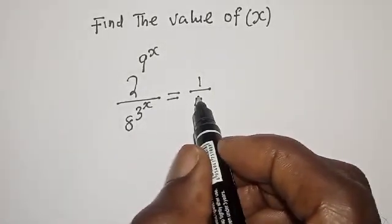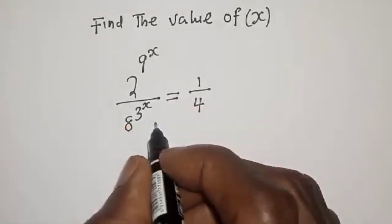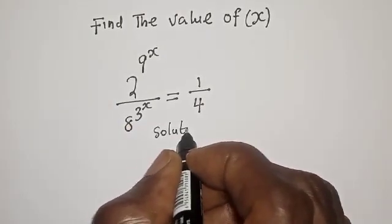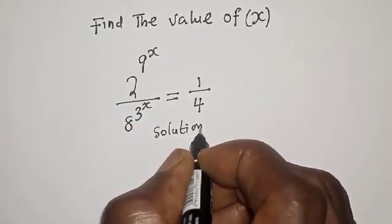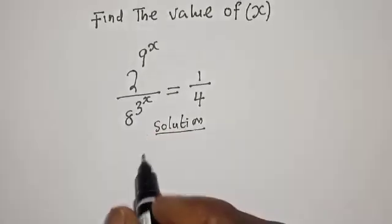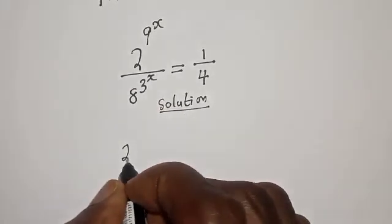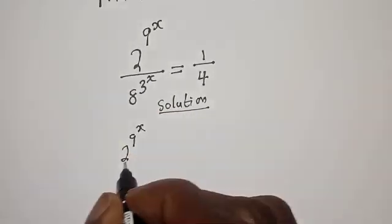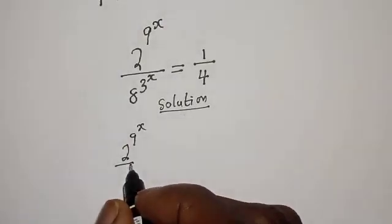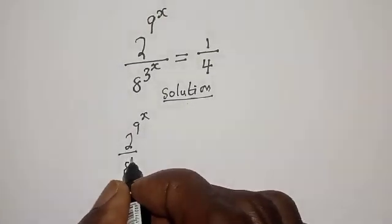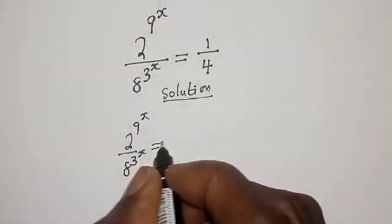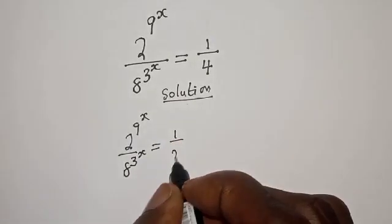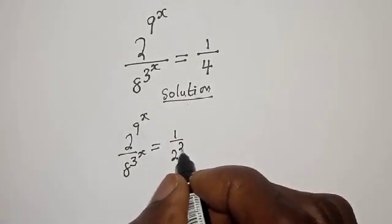Don't forget to like, share, comment, and subscribe. We have 2 raised to power 9 raised to power s over 8 raised to power 3 raised to power s is equal to 1 over 4, which can be written as 2 raised to the power of negative 2.